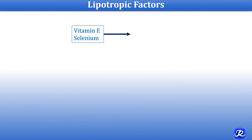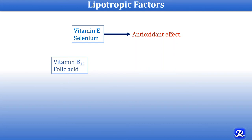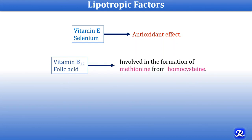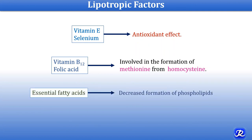Vitamin E and selenium are also lipotropic factors because of their antioxidant effects. Vitamin B12 and folic acid are involved in the formation of methionine from homocysteine; since methionine is required as a methyl group donor for choline synthesis, vitamin B12 and folic acid are important lipotropic factors. Essential fatty acids are also important: decreased essential fatty acids lead to decreased phospholipid formation, because arachidonic acid — an important constituent of phosphatidylcholine (lecithin) — is derived from linoleic acid, an essential fatty acid. Thus, deficiency of essential fatty acids leads to fatty liver.